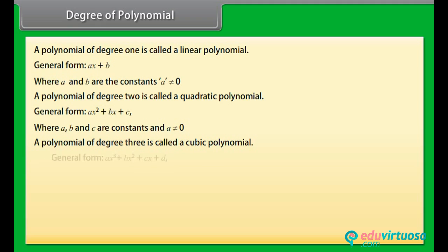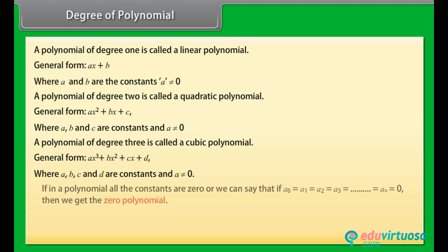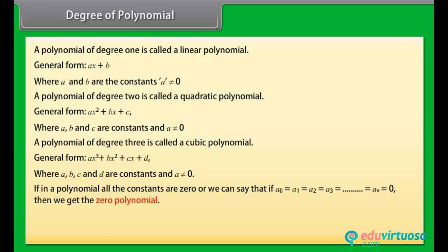A polynomial of degree 3 is called a cubic polynomial. Its general form is ax cubed plus bx squared plus cx plus d, where a, b, c, and d are constants and a is not equal to 0. If all the constants are 0 — that is, a0 = a1 = a2 = ... = an = 0 — then we get the zero polynomial, denoted by 0. The degree of the zero polynomial is not defined.